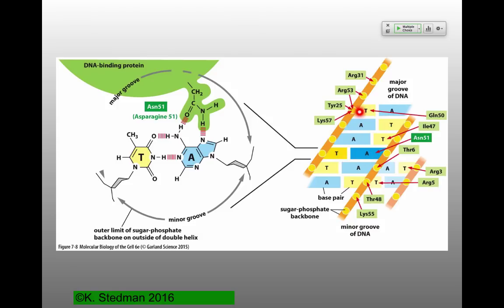You also have interactions with the backbone — particularly ionic interactions because the phosphates are highly charged. We're getting better at designing DNA-binding proteins with the appropriate amino acids to put them in the right place in double-stranded DNA, but it's still really hard to do. Base pairing interactions are a heck of a lot easier way to go.